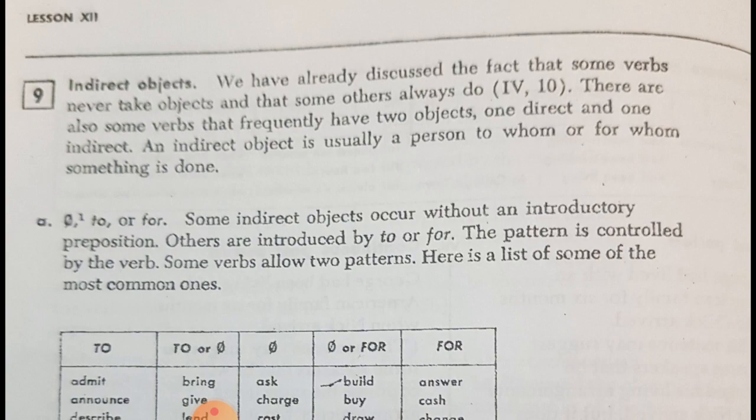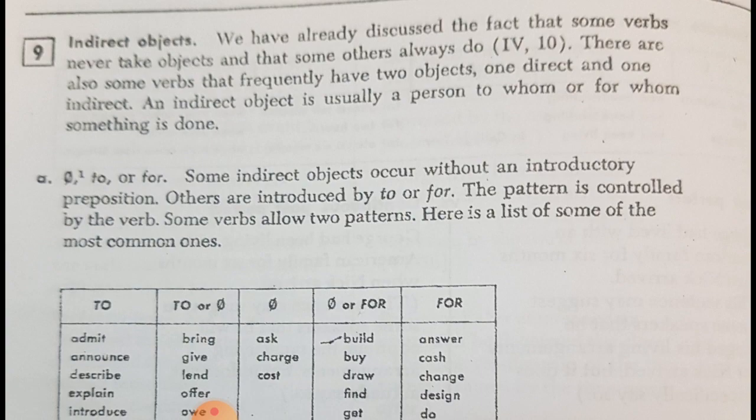Some verbs in English can take two objects. For example, the verb give, or you can say announce, describe, so many verbs in English. They have the ability to take two objects. One of them is called the direct object, the other one is called indirect object.